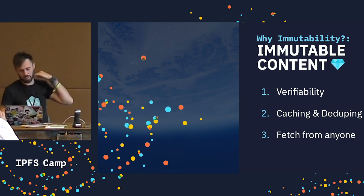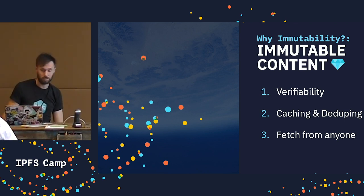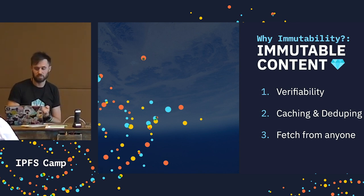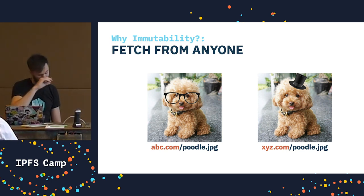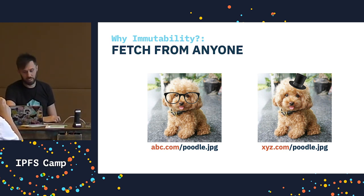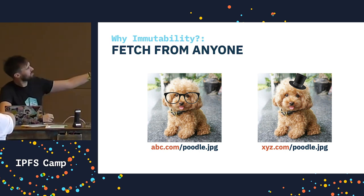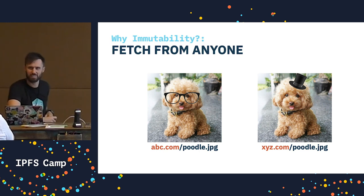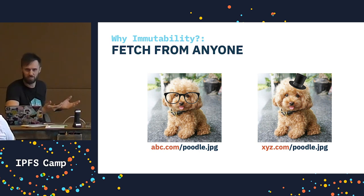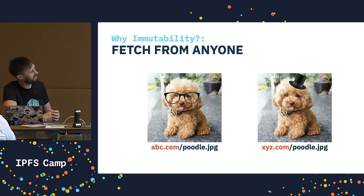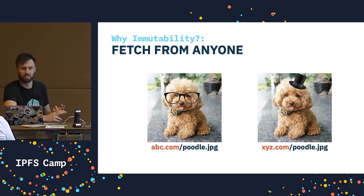Fetch from anyone: if the content is immutable and I can verify its integrity, I should just be able to get it from anyone. This suits P2P really well. But that's not true on the web today. If two sites are hosting the same content, we can't trust that any of those copies are correct — they might both be adorable poodles, but it needs to come from a trusted source because I can't verify its integrity.